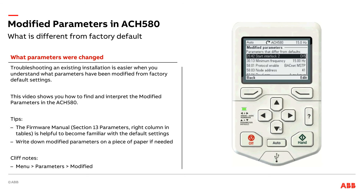So there you have it — a list of modified parameters. A very quick, easy way, if you want to see how this drive has been configured differently from factory defaults, this is a great way to do it. If you have any questions on this, feel free to reach out to your local ABB drive specialist or your ABB regional application engineer. Thank you.